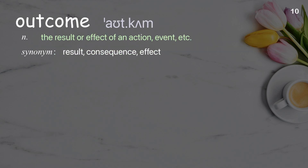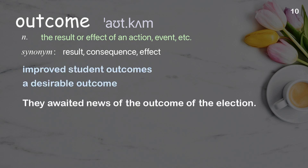Outcome: the result or effect of an action or event. Examples: improved student outcomes, a desirable outcome. They awaited news of the outcome of the election.